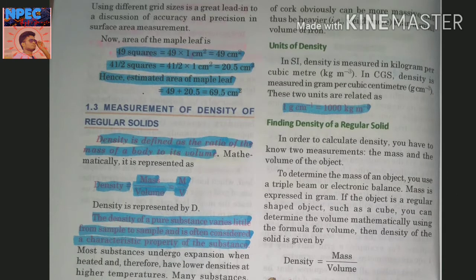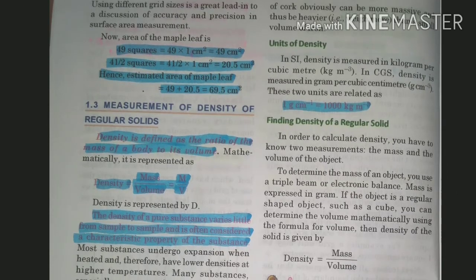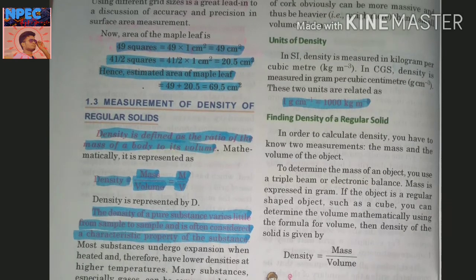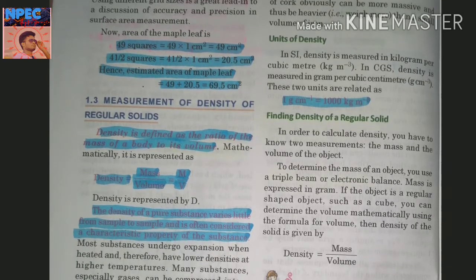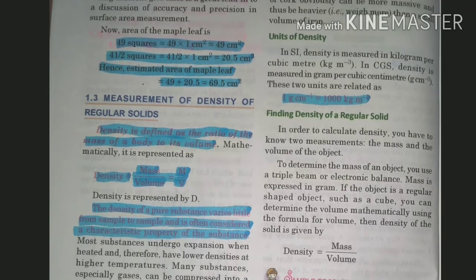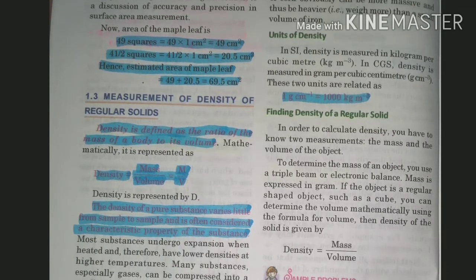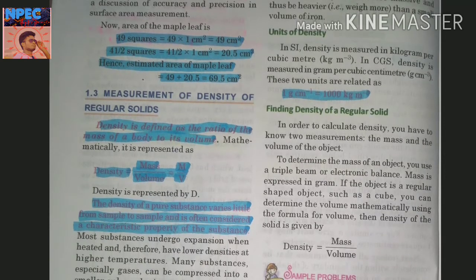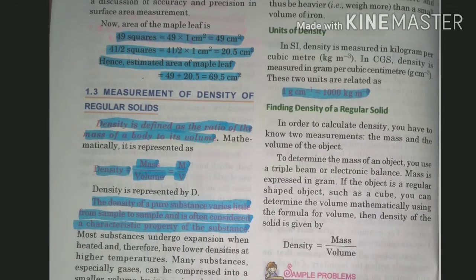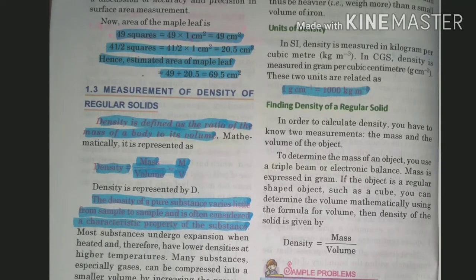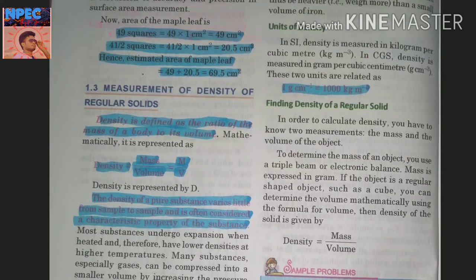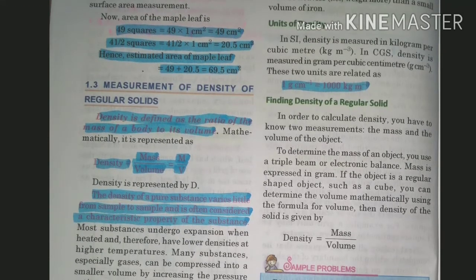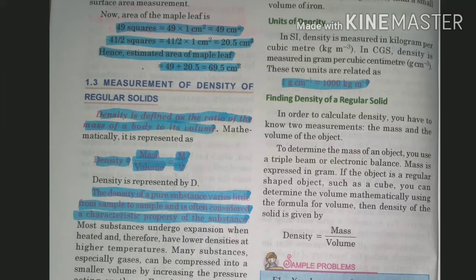Density is defined as the ratio of mass of a body to its volume. Mathematically it is expressed as: Density (D) = Mass (M) / Volume (V).